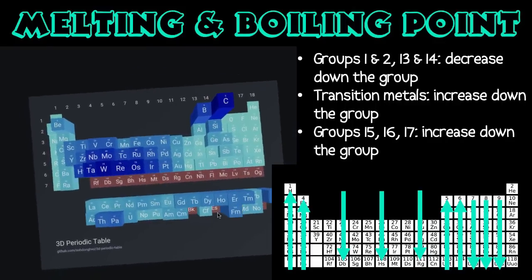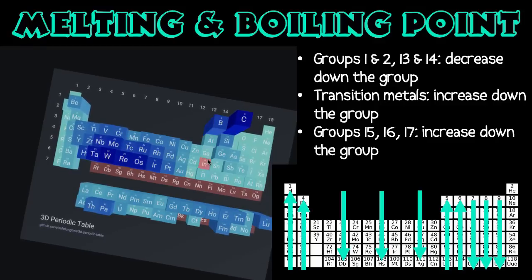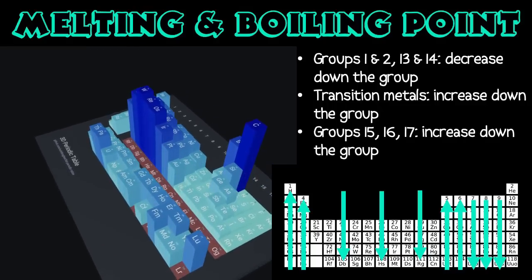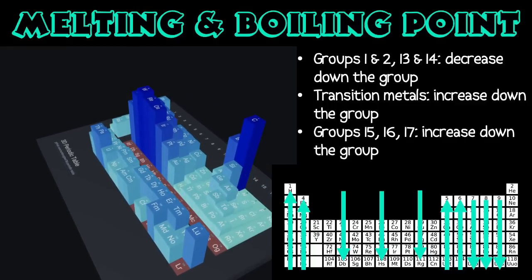For groups thirteen and fourteen, melting and boiling points also decrease down the group. This is because the further down the group you go, the more orbitals there are, and therefore the more the outer valence electrons are shielded from the nucleus. The inner orbitals shield the outer ones from the nucleus, leading to weaker interactions, so less energy is required to melt or boil the substance.